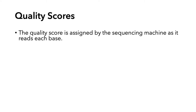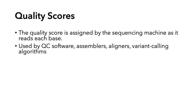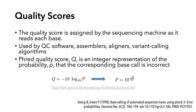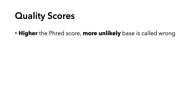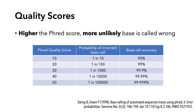Quality scores are assigned by the sequencing machine as it reads each base. They're used by QC software, and also assemblers, aligners, and variant calling algorithms. You'll see quality scores often referred to as Phred or Q scores. This is an integer representation of the probability that the corresponding base call is incorrect, which means that the higher the Phred score, the more unlikely the base is called incorrectly. A Phred score of 20 corresponds to an error rate of 1 in 100, with a 99% probability of a correctly identified base.